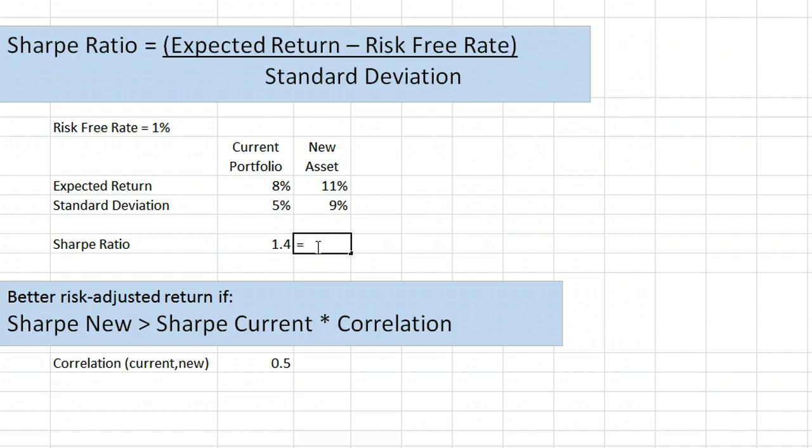Here, the Sharpe Ratio of the new asset is the difference between the expected return and the risk-free rate, 11 minus 1, divided by the standard deviation 9, to get 1.1 as the Sharpe Ratio.